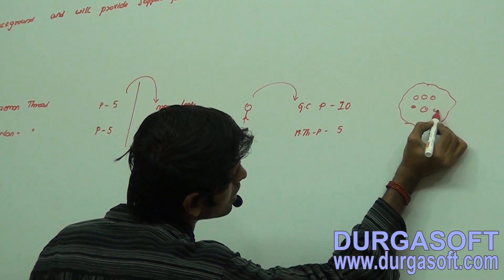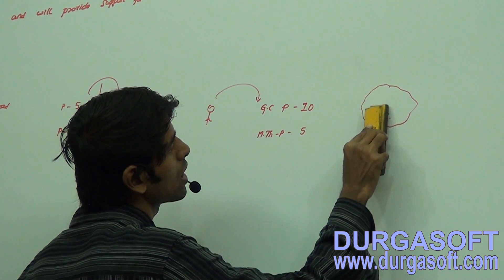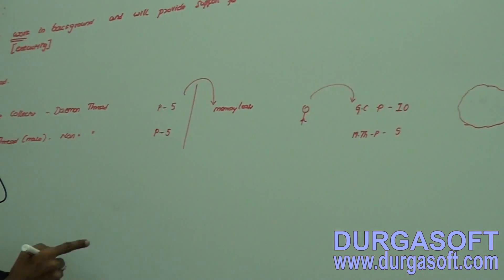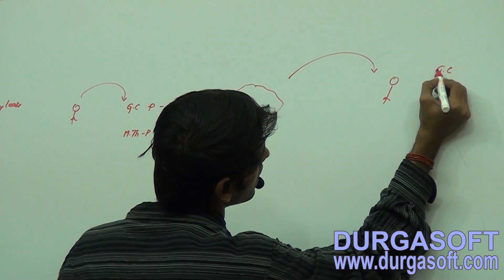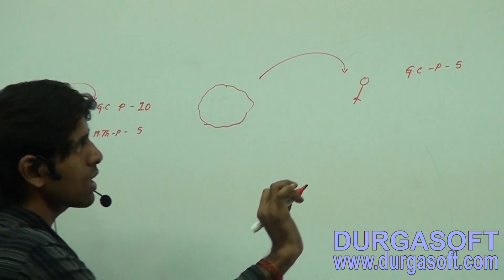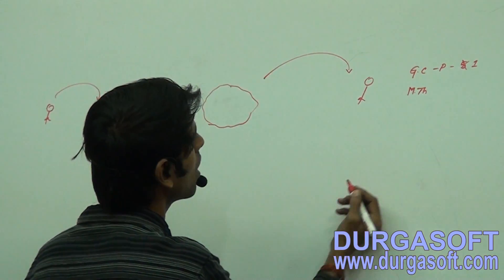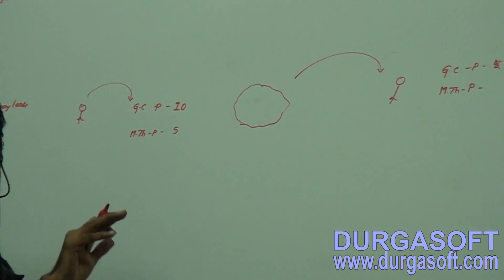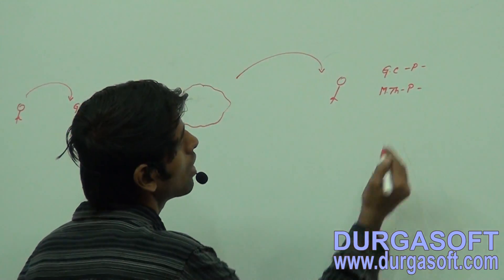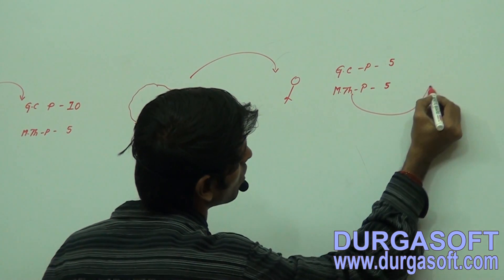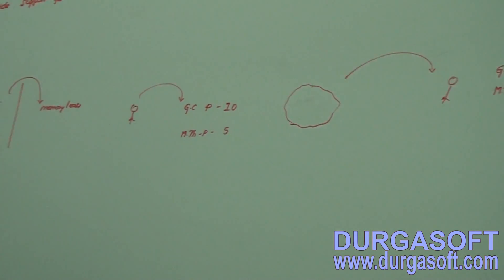The garbage collector comes in and frees all the useless objects from memory. Once memory is cleared, the JVM decreases the garbage collector's priority back to something like 5 or 1, and increases the main thread's priority so it can create its useful objects. Daemon threads always work in the background to support non-daemon threads.